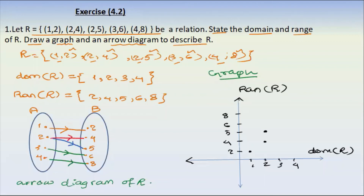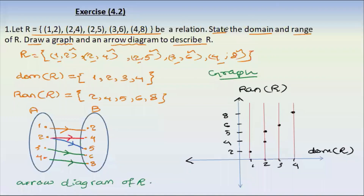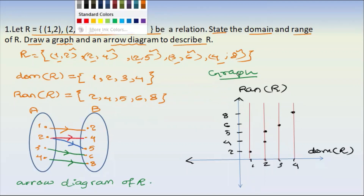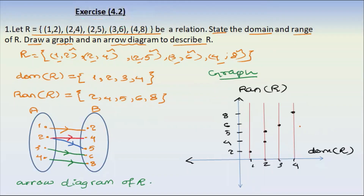3.6 is 3, 6 is 6. 4.8 is 4, 8. We can get an easy conversation when we look at the table, then we will talk about that. We see what happens next time — relation of R, graph of R.